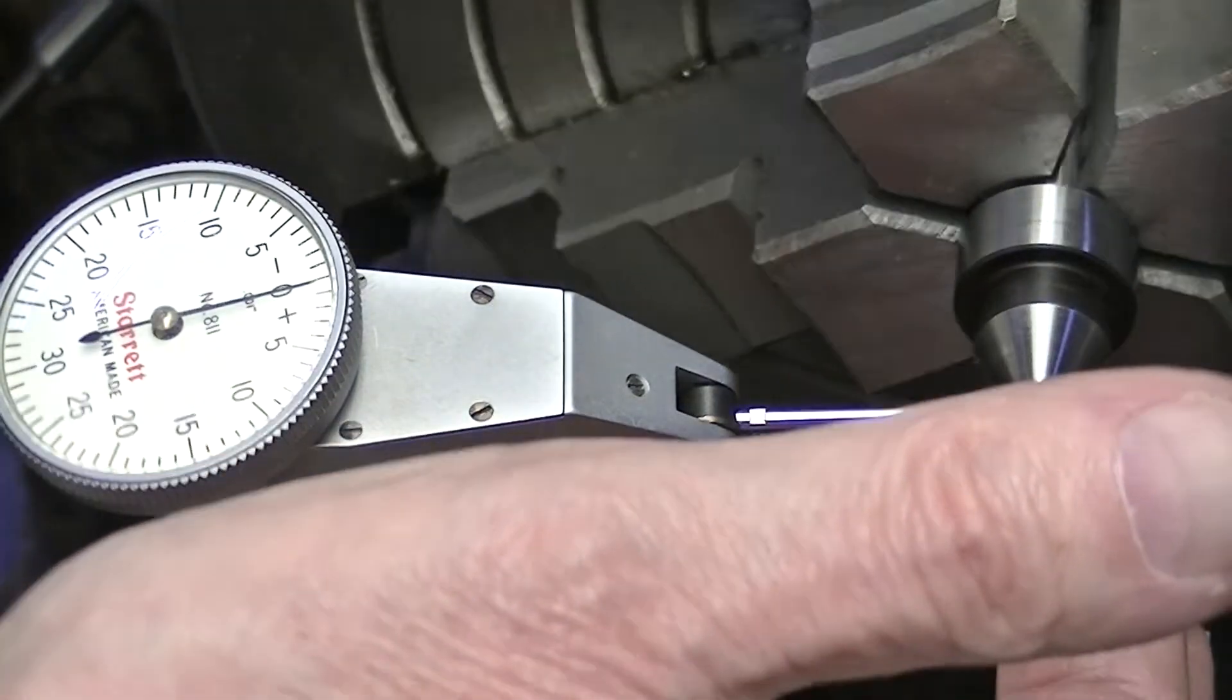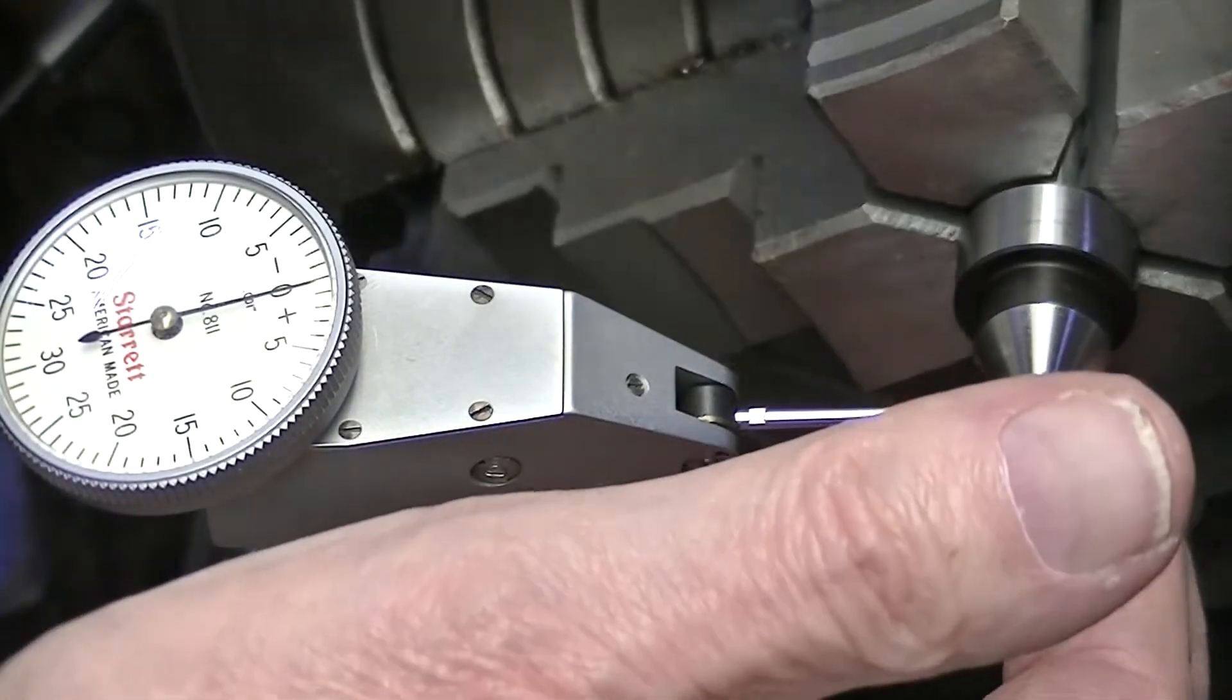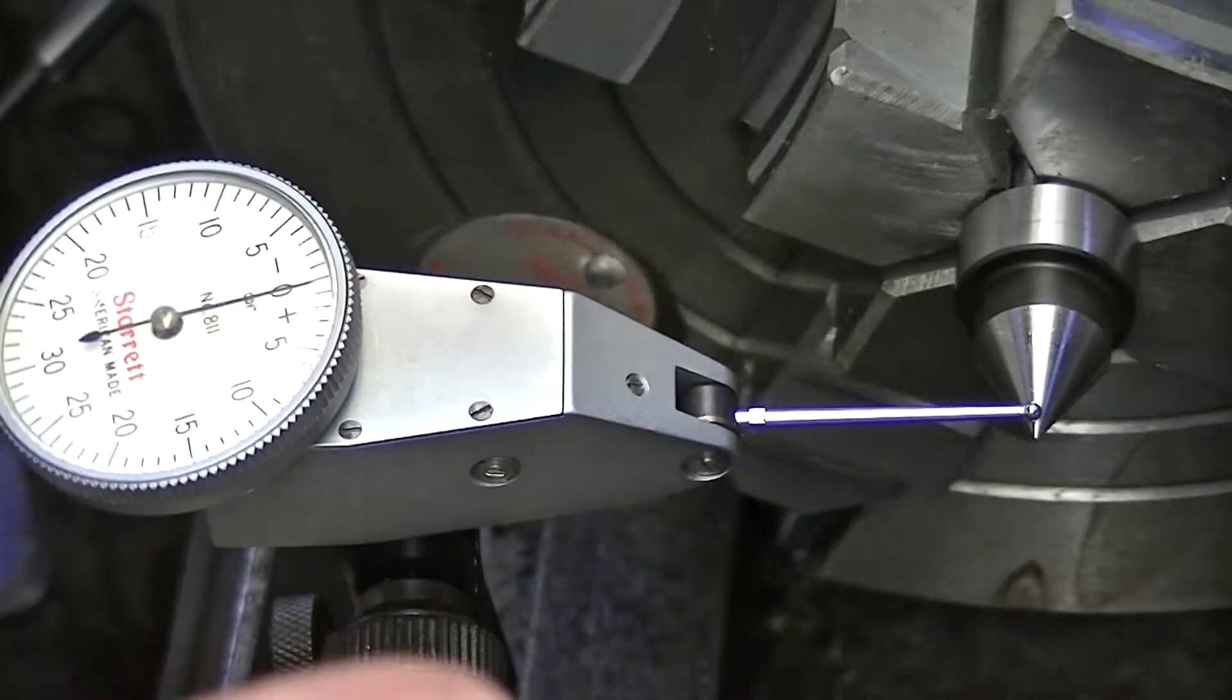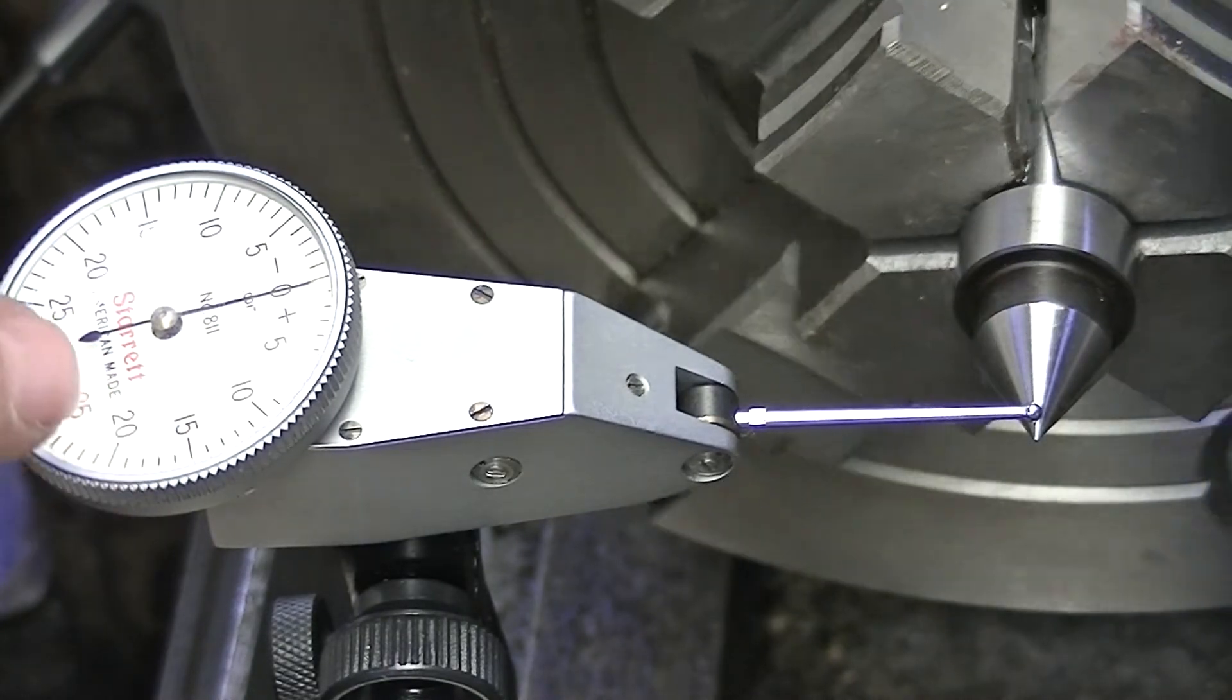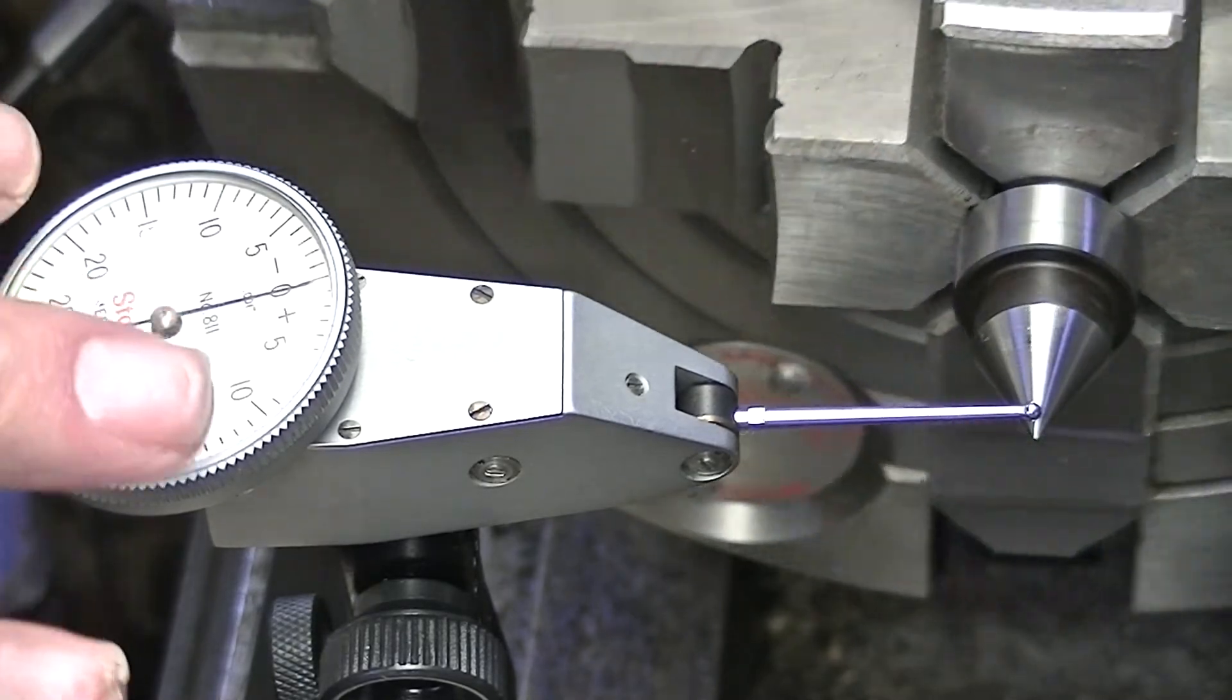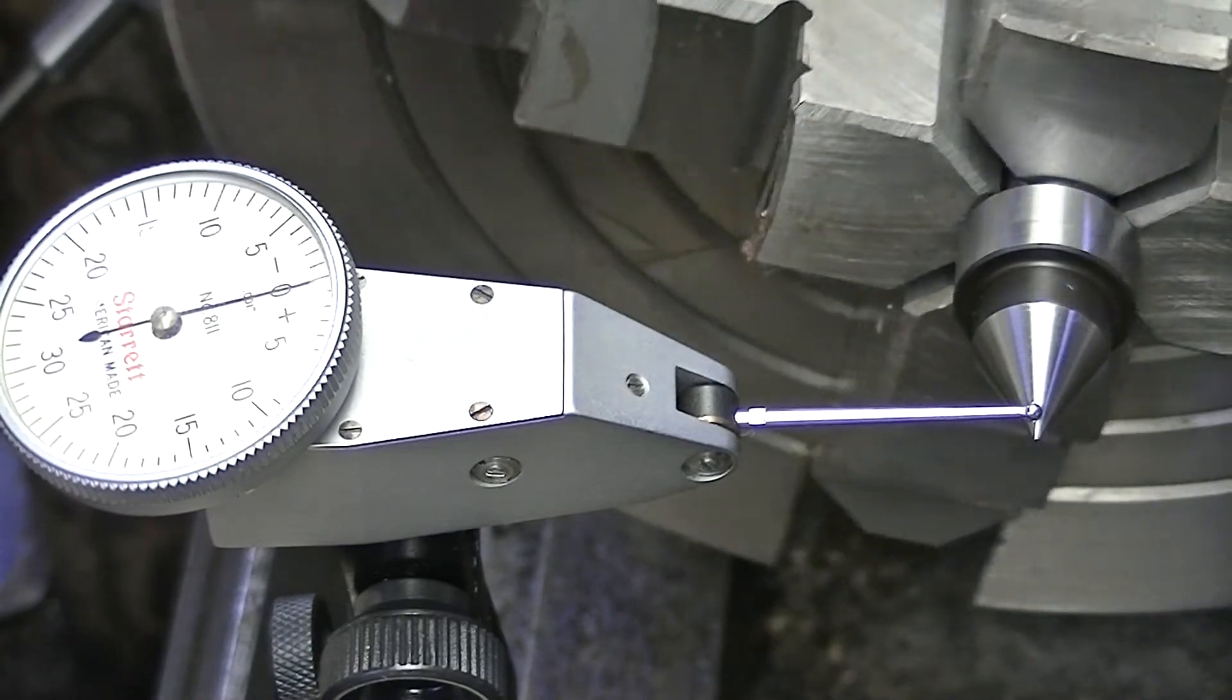So this is a soft center I got from a woodworking supply house in England. This is Starrett number 811, it's a thousandths of an inch graduation. This is fitted to a magnetic base that's on the carriage.